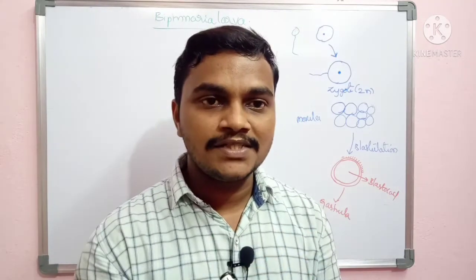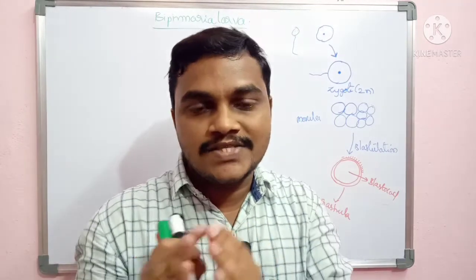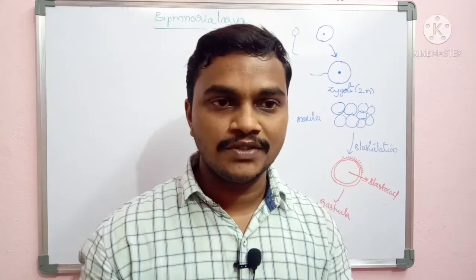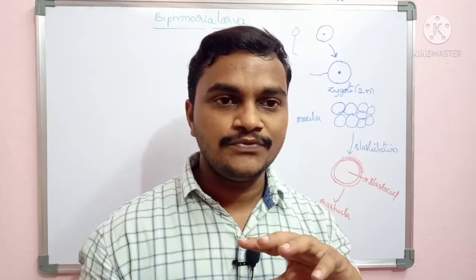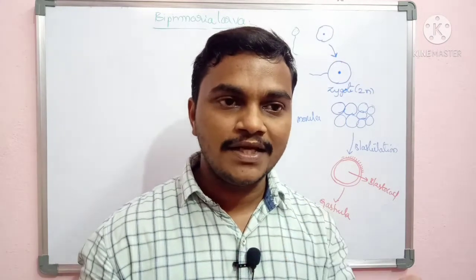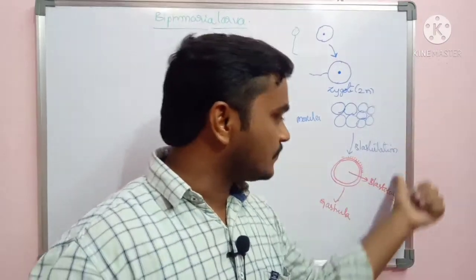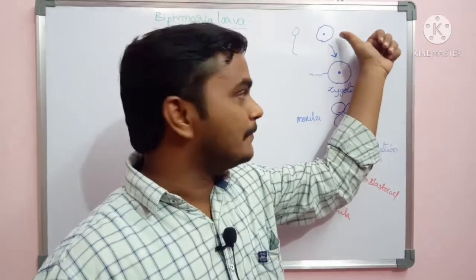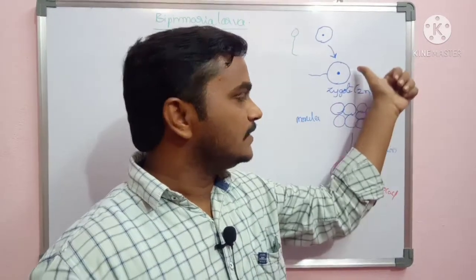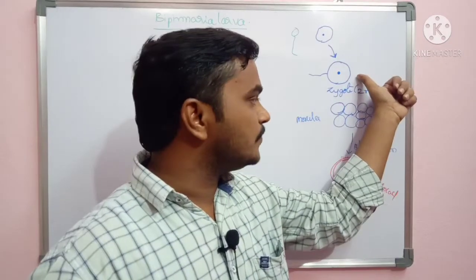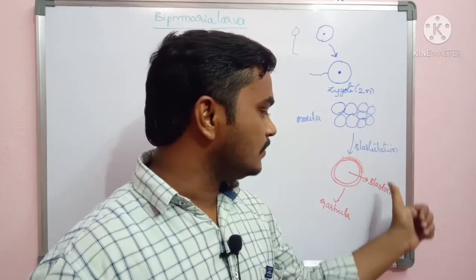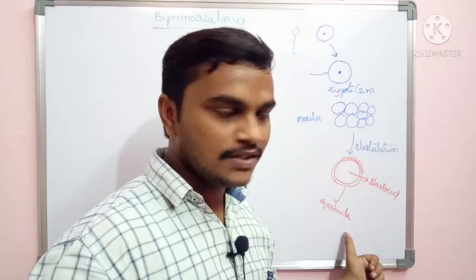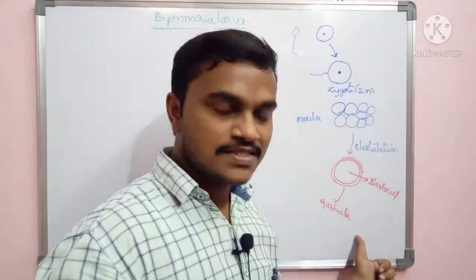So first, the primary Bipinnaria larva is created, then secondary Bipinnaria larva, then adult. The sequence is: male and female gametes are created, then fusion, then zygote, morula, blastula, blastocyst, then gastrula. These are the different stages.